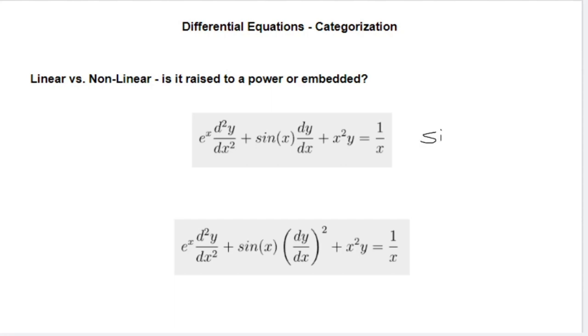So we don't have something like sine of dy dx. Nothing's embedded. If we look at our second equation here, we don't have any embedding either, we have our coefficients, but we do see here that the derivative is raised to a power. Therefore, this is nonlinear. So our first one here is linear, our second one here is nonlinear.